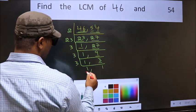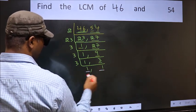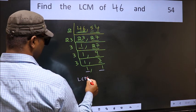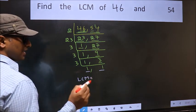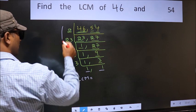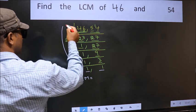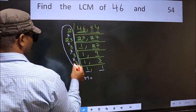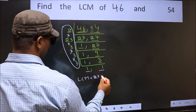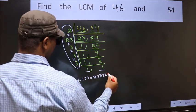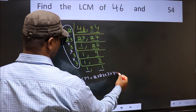So we got 1 in both places. Our LCM is the product of these numbers: 2 times 23 times 3 times 3 times 3.